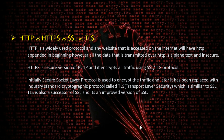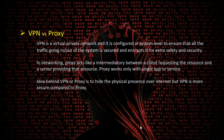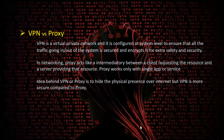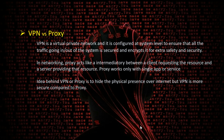VPN provides encryption, security, and safety at the entire system level — ensuring all traffic coming into and going out of the system is secure. Proxy, by contrast, works only at the application level for a single app, acting as an interface between the client and server. Both VPN and proxy aim to hide physical presence on the internet. In terms of safety, VPN is more secure than proxy; however, VPN is slower in speed compared to proxy.